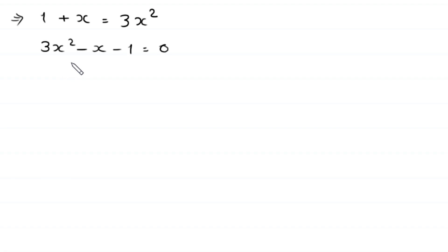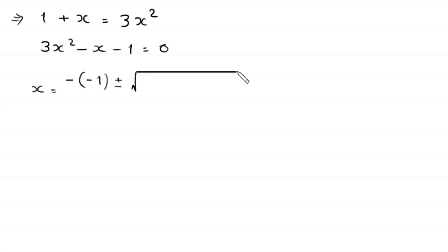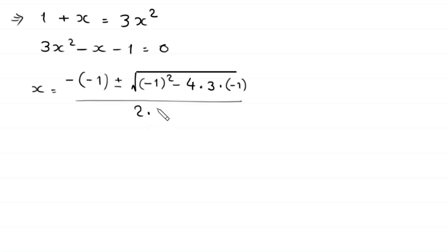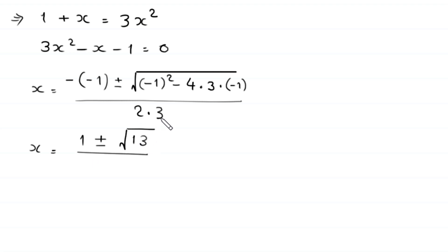For 3x² - x - 1 = 0, this is not factorable so we use the quadratic formula. With a = 3, b = -1, c = -1: x = (-(-1) ± √((-1)² - 4·3·(-1))) / (2·3) = (1 ± √(1 + 12)) / 6 = (1 ± √13) / 6.